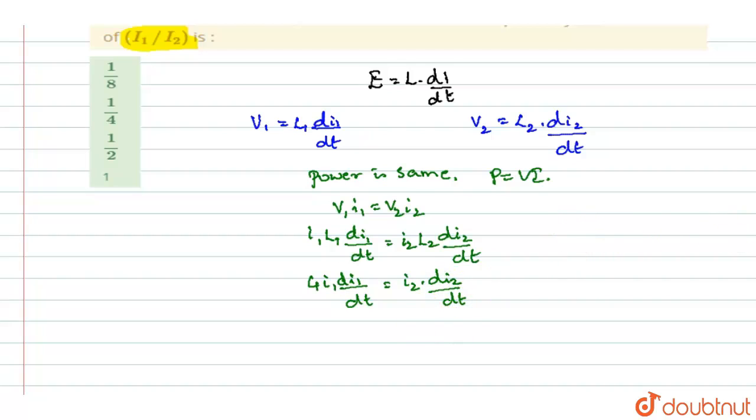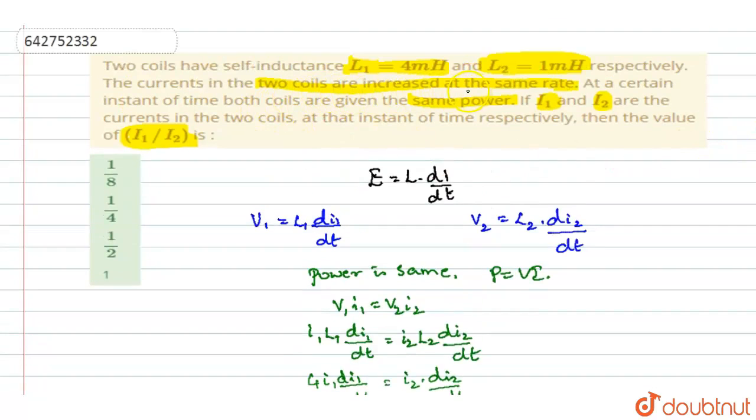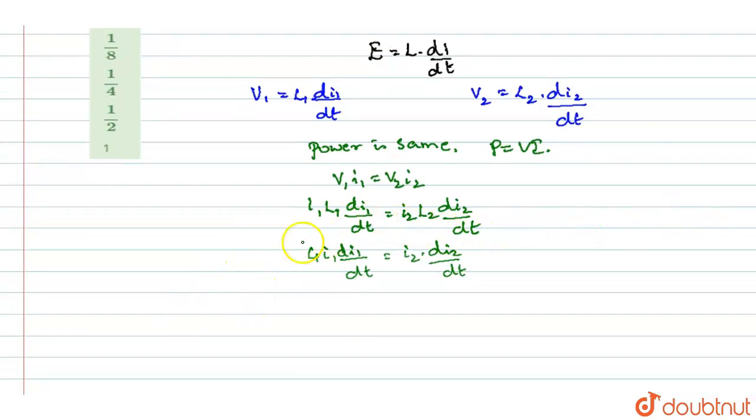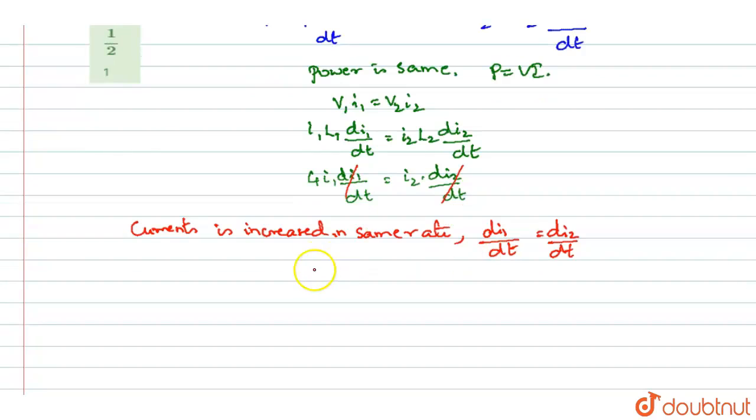In this question, they are saying that the currents in two coils are increased at the same rate. The rate at which the current is increased from zero is same. So you can say that di1 by dt equals di2 by dt. So these two get cancelled. You will be writing it as 4 I1 equals I2.